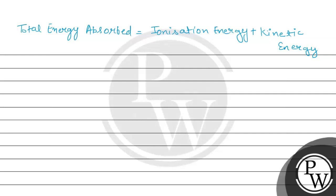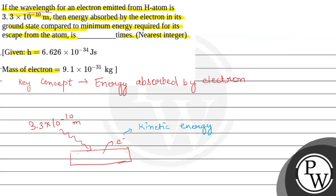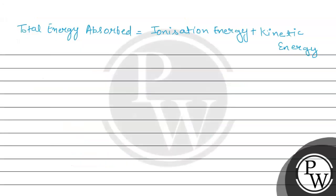First, we will find the minimum amount of energy required, because we need to compare with the minimum energy. The formula for that is 21.8 × 10⁻¹⁹ × Z²/n². This is the minimum amount of energy required to escape the electron, which is the ionization energy.